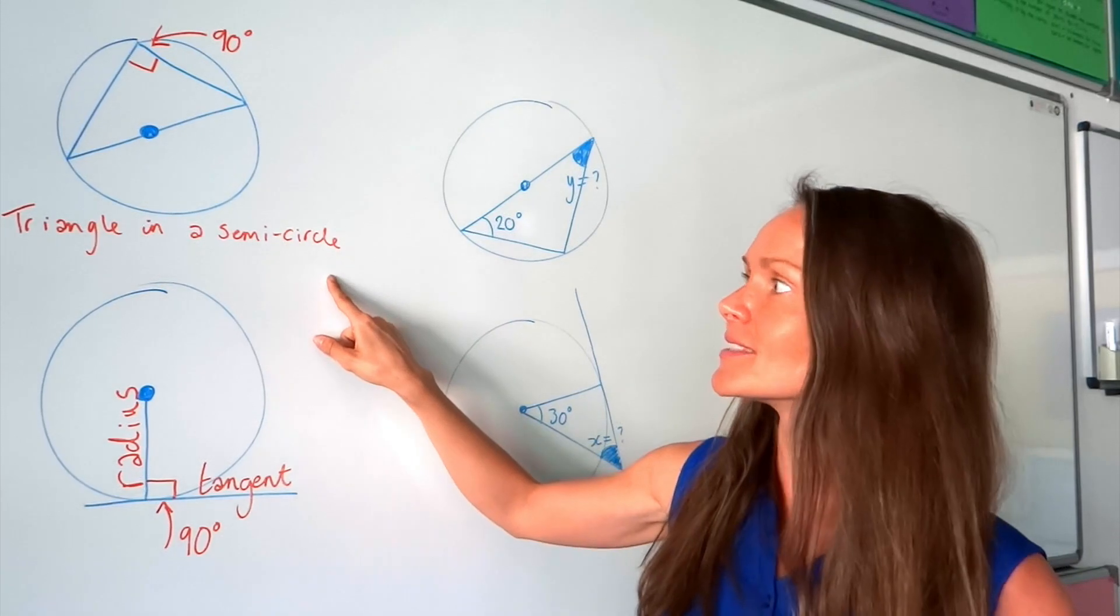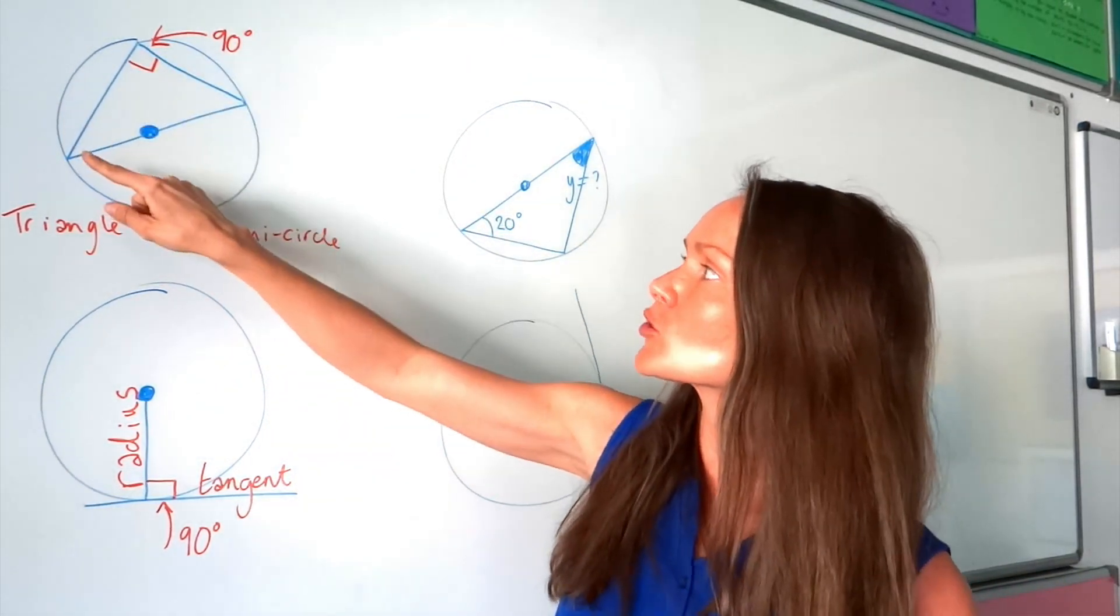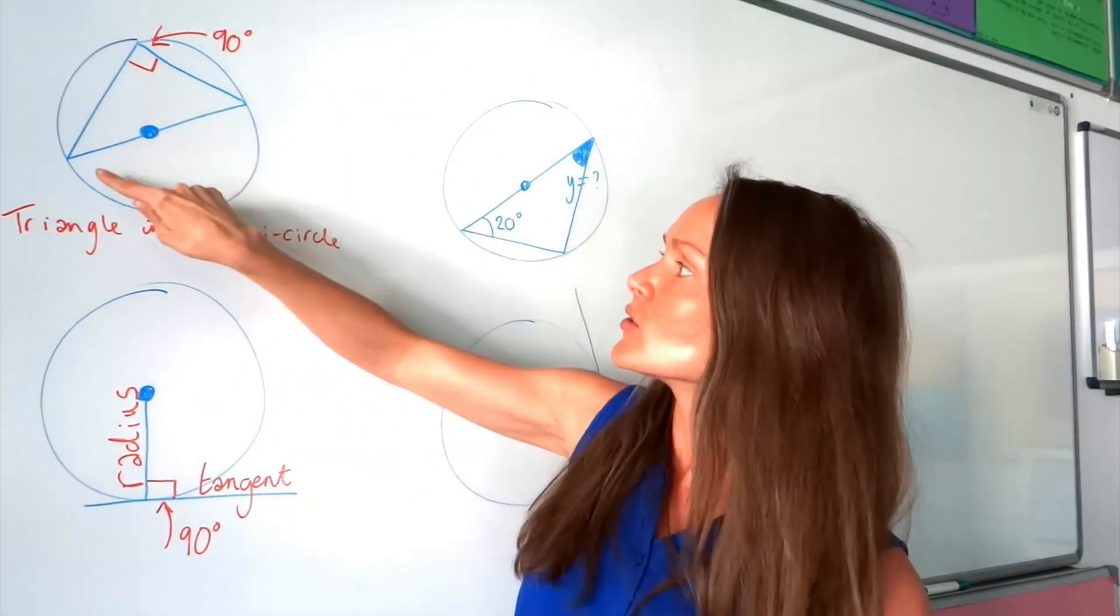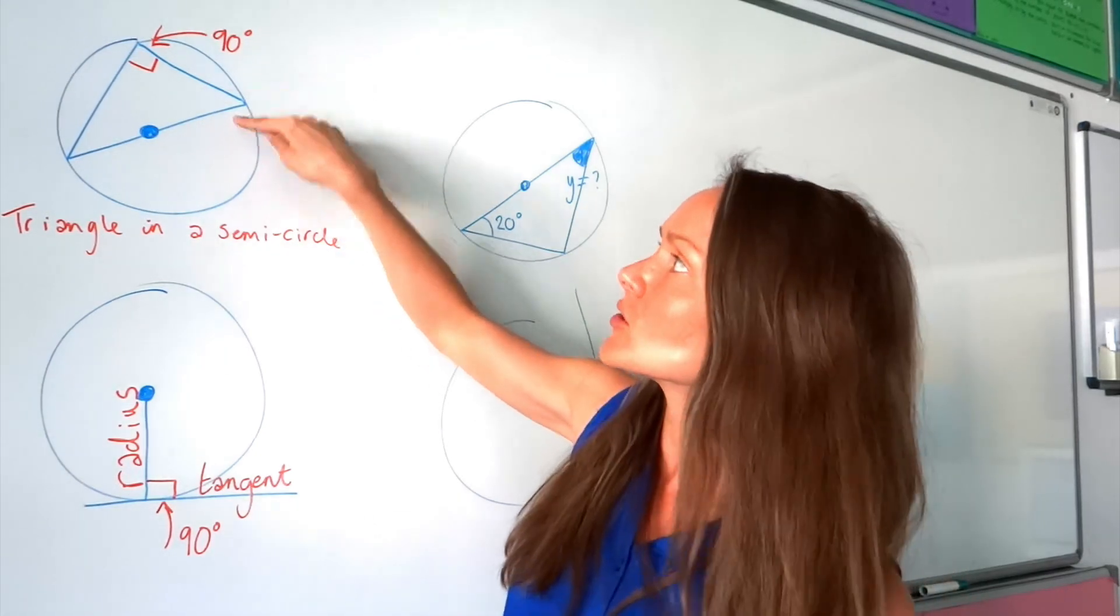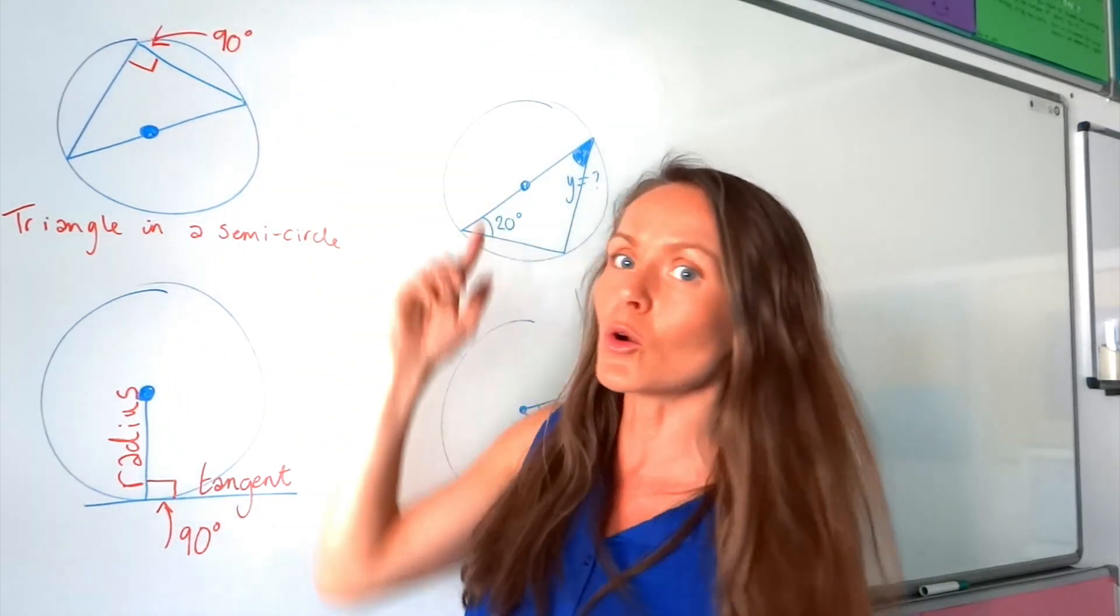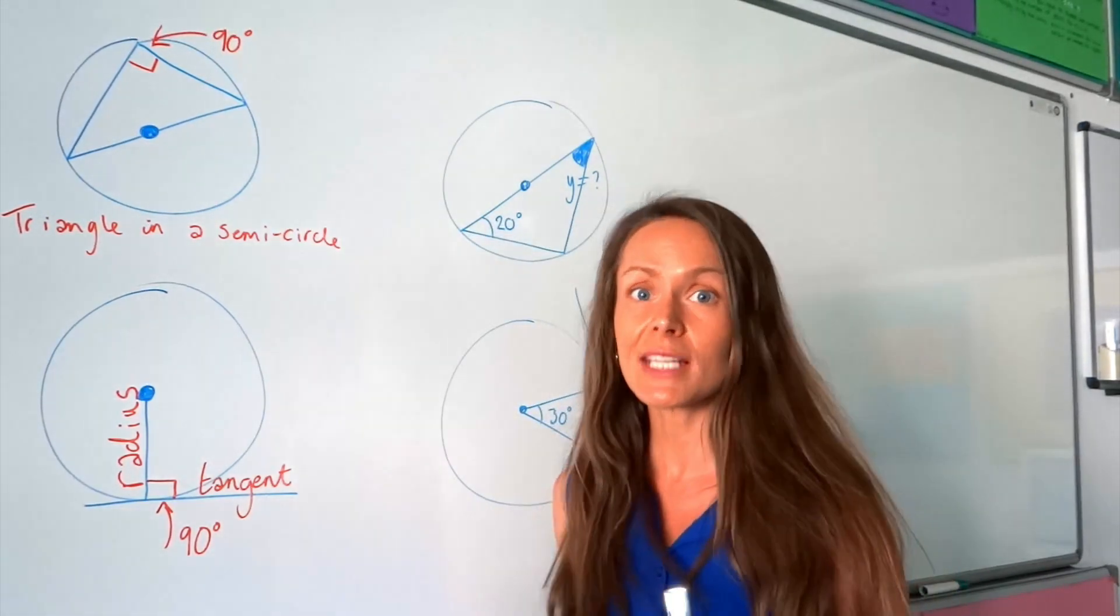The first one is a triangle in a semicircle. So whenever you see a triangle in half a circle, so this is the diameter here, the angle that touches the circumference here is always 90 degrees. So you just need to remember that.